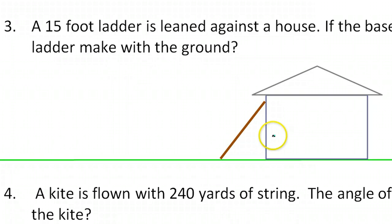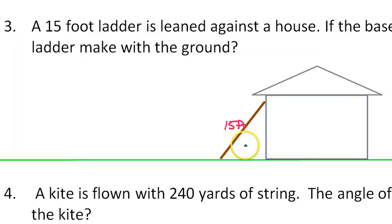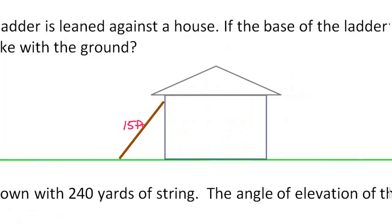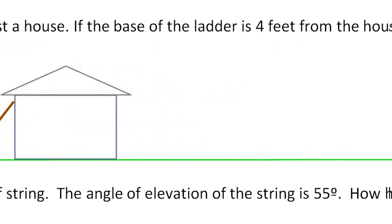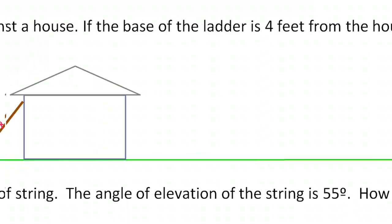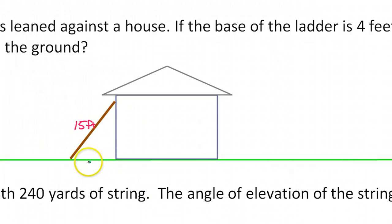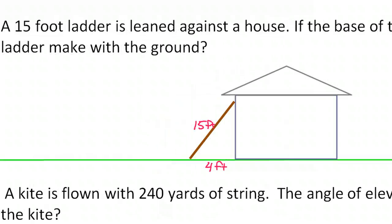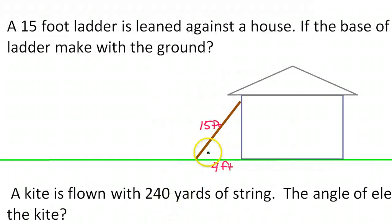So this is a ladder leaning against the side of this house — it is a 15-foot ladder, leaning against the side of the house. The base of the ladder is four feet from the house, so that means this is four feet right here. And we want to know what angle does the ladder make with the ground, which is just like the angle of elevation.